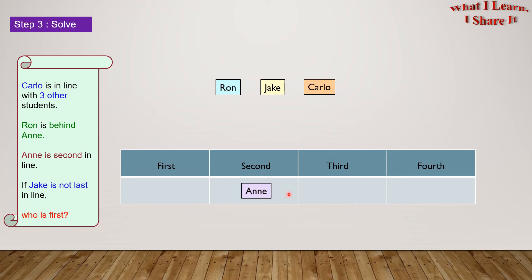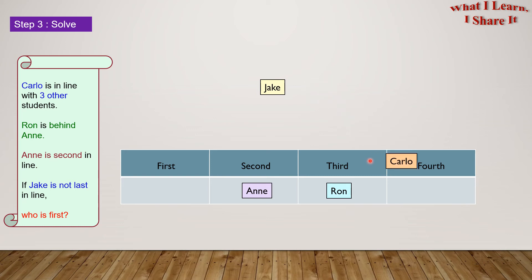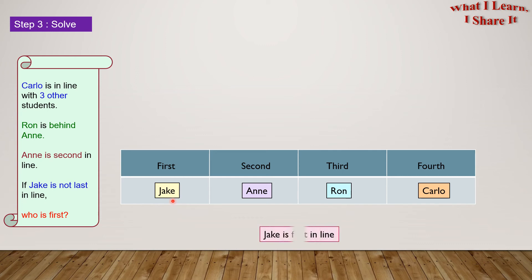Since Ron is behind Anne, Ron will go in the third place. Since Jake is not in the last place, Carlo will be last — let's put Carlo in the fourth place. So now only Jake is left, and here he goes in the first position. So Jake is first in line.